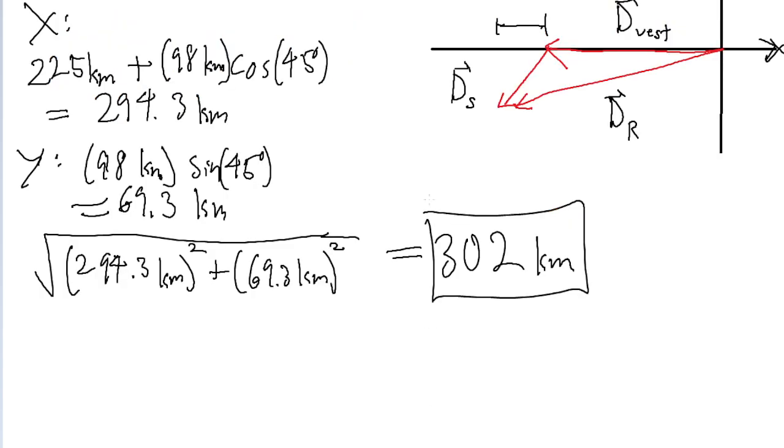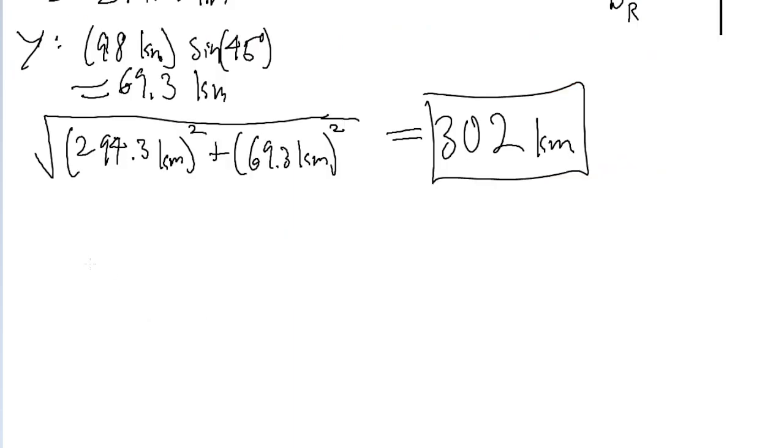So that is the magnitude of the vector. But now we're also asked for the angle. So to find the angle, the angle is equal to the inverse tangent of the y component, or the vertical component, divided by the horizontal component.